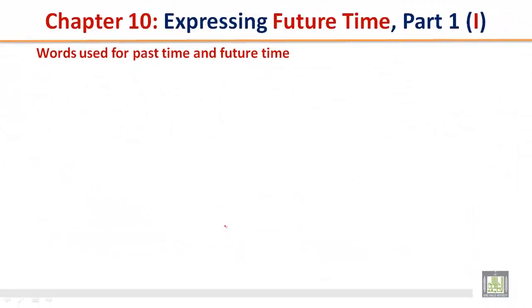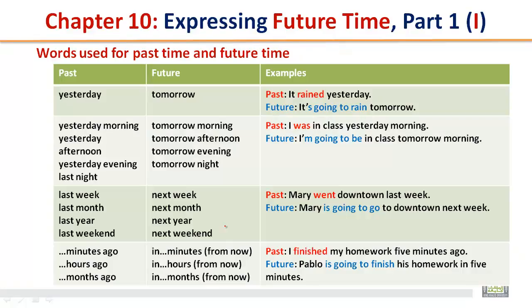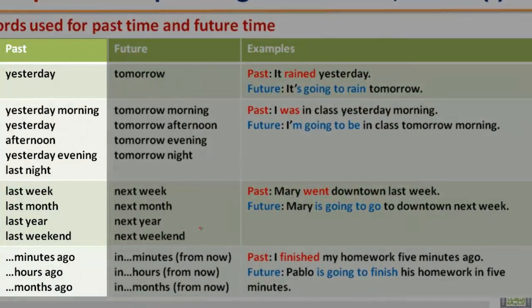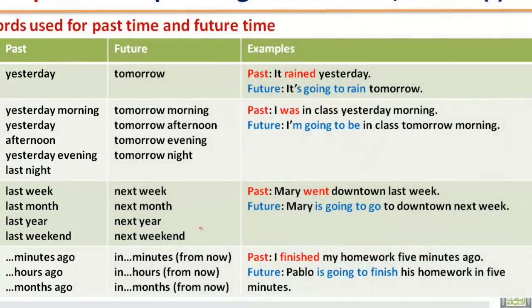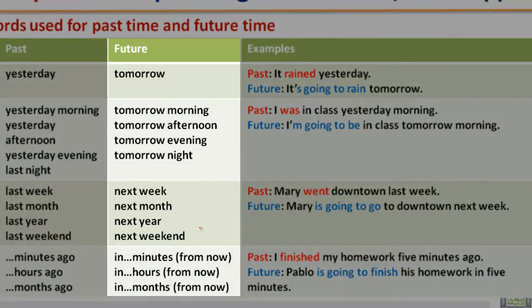Words used for past time and future time. Past: yesterday, yesterday morning, yesterday afternoon, yesterday evening, last night, last week, last month, last year, last weekend, minutes ago, hours ago, months ago. Future: tomorrow, tomorrow morning, tomorrow afternoon, tomorrow evening, tomorrow night, next week, next month, next year, next weekend, in five minutes from now, in two hours from now, in three months from now.